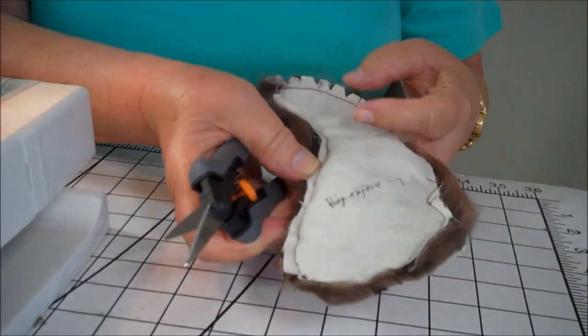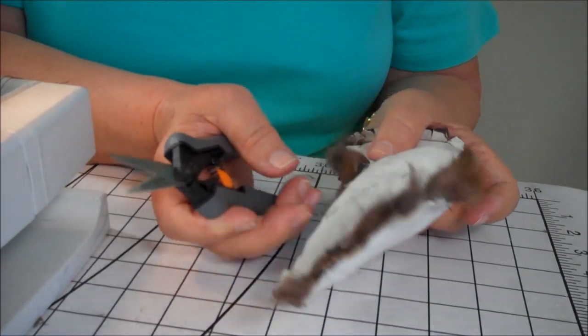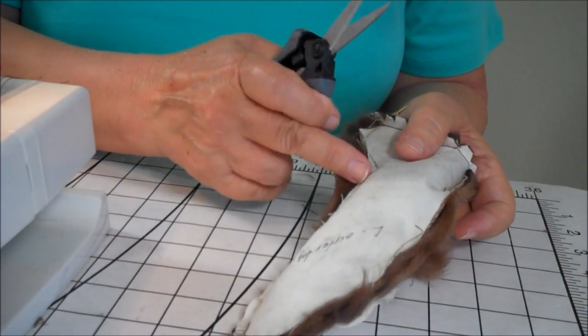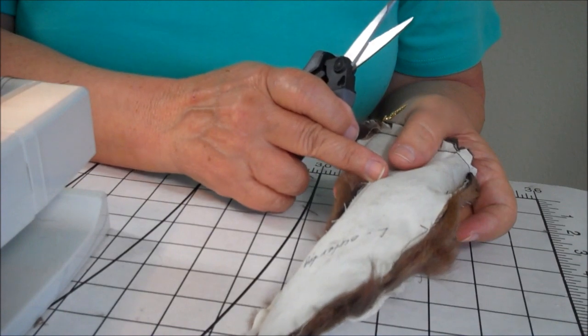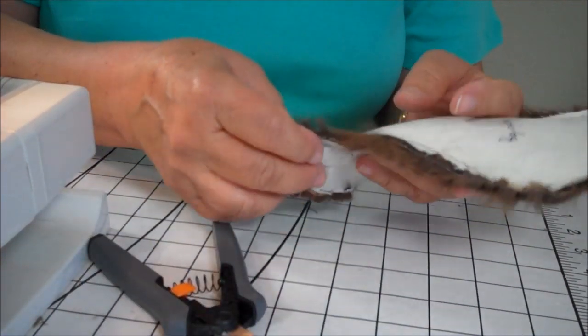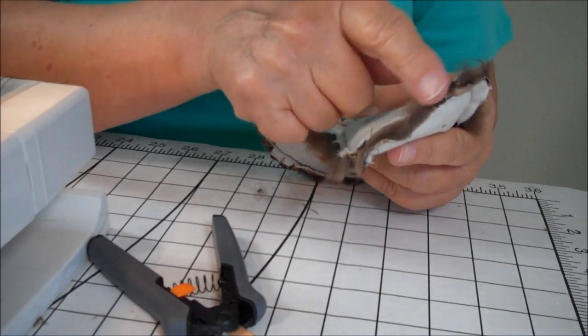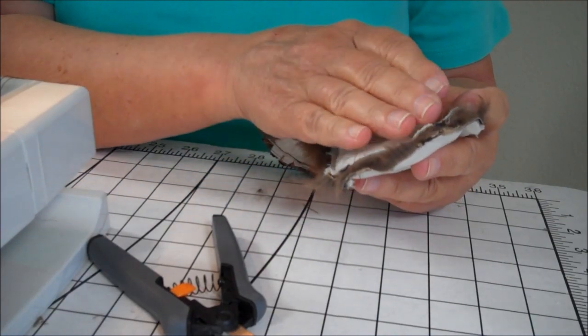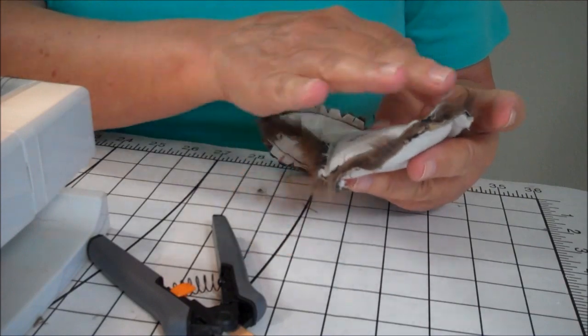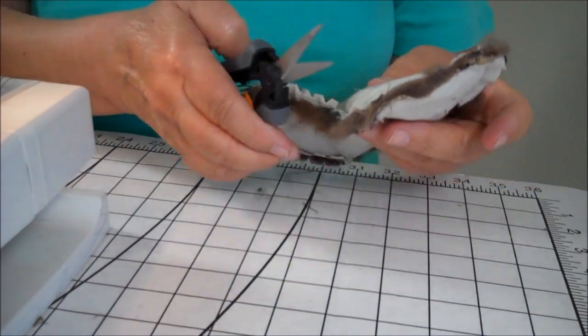Before we turn this leg right side out, we have to do some more clipping on the stress points. We're going to do a couple of clips in here so that when the leg is turned right side out, it'll have a nice curve. We've got to do some clipping around here because we want it to bend smoothly once we've turned it right side out.